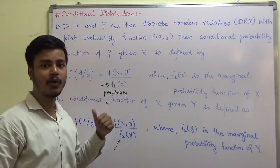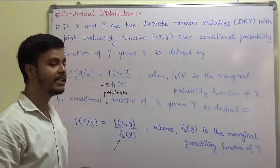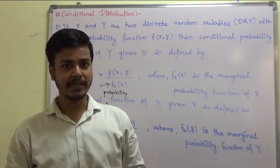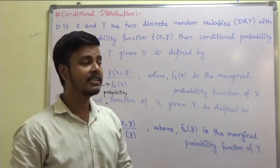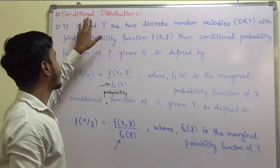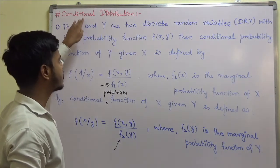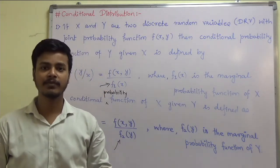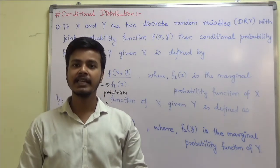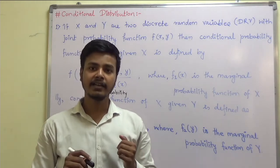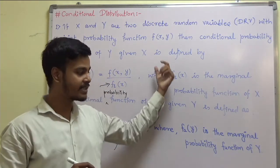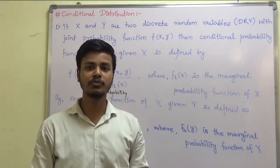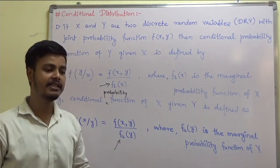This was the definition of conditional probability function for the discrete random variable. The same definition can also be defined for the continuous random variable. I would like you to pause the video for a minute, try to write the definition of conditional probability function for the continuous random variable, make the necessary changes, and then resume the video to see the definitions.